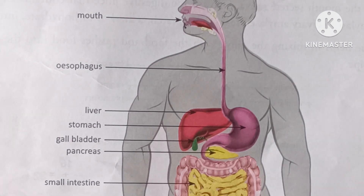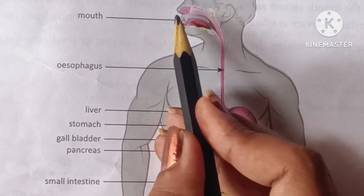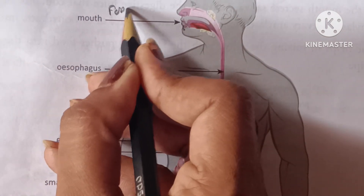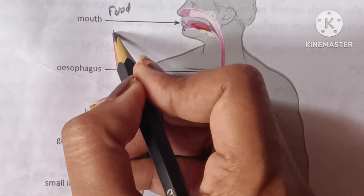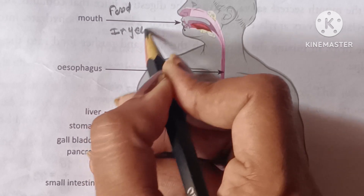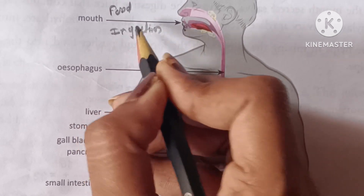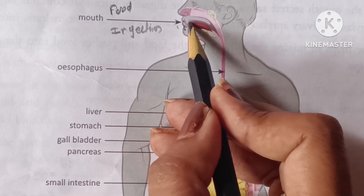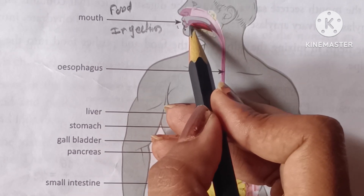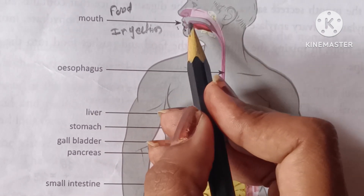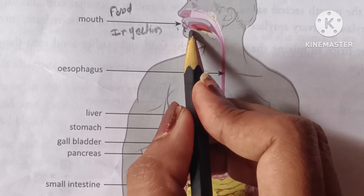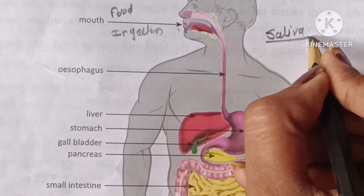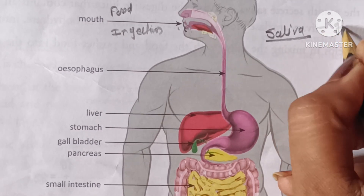Digestion starts from the mouth. The taking of food into the mouth is called the ingestion process. With the help of the mouth, we cut the food using teeth. The food is cut into small pieces and mixed with saliva, which is secreted by the salivary glands.